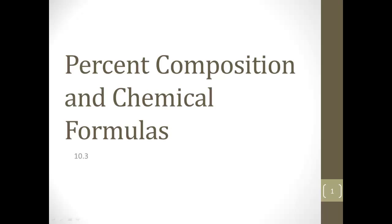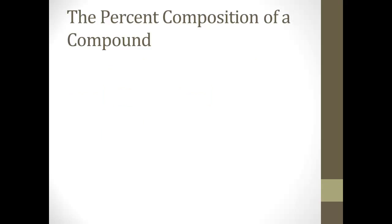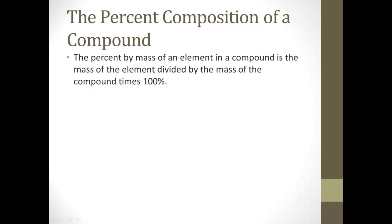Alright, here we go with our video for 10.3 Percent Composition and Chemical Formulas. First thing we're going to talk about is something new, the percent composition of a compound. That's defined as the percent by mass of an element in a compound is the mass of the element divided by the mass of the compound. So it's just like any other real percentage except it's done based upon the atomic mass. The formula for percent composition by mass is the mass of the part, whatever part we're talking about, divided by the mass of the whole times 100 because it's a percent.